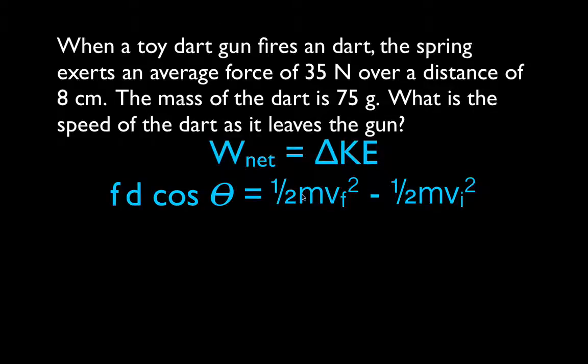So here we have one-half mv final squared, minus one-half mv initial squared. Now you need to remember, for this type of problem, that the initial velocity, when the dart is in the gun, the initial velocity is zero. If the initial velocity is zero, then the initial kinetic energy is zero. So we can drop that term, cancel that term out of our equation.